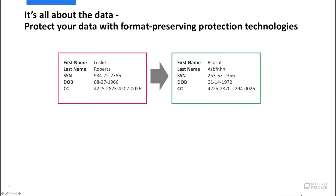It's all about the data. We have to start understanding how we protect the data, what it looks like, and how users interact with it. Here is a simple example: we've got a person's first name, last name, social security number, date of birth, and a credit card number. Using Voltage Secure Data to protect this, you can see that the length of the data and the data types are preserved, but these are random permutations of the original data — using format-preserving encryption, and perhaps tokenization for the credit card number.